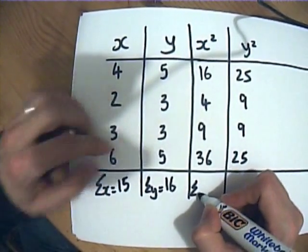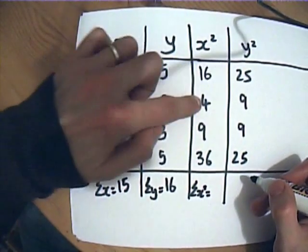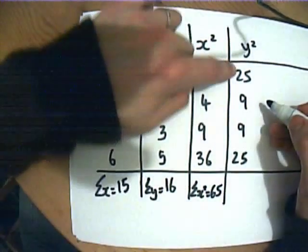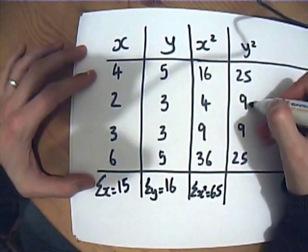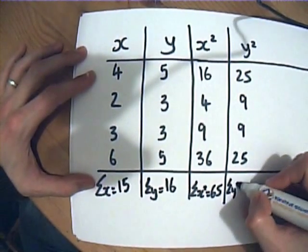And then I need to find the sum of x squared. So what's the total of these x squareds? 20, 29, 35, 65. Sum of y squared: 25, 34, 43, 48, 68.